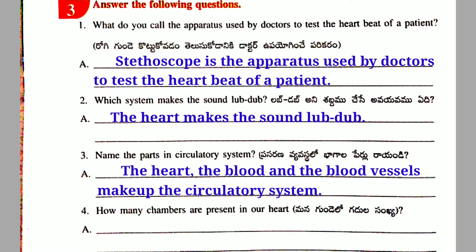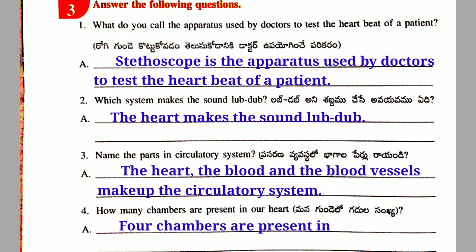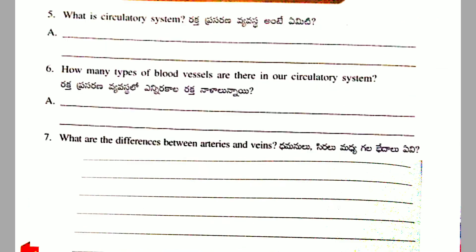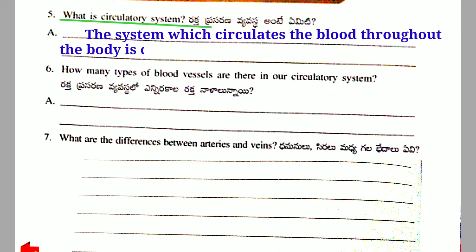Fourth question: How many chambers are present in our heart? Answer: Four chambers are present in our heart. Fifth question: What is the circulatory system? Answer: The system which circulates the blood throughout the body is called the circulatory system.